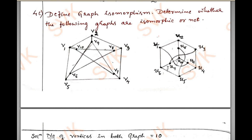This is the given question: define graph isomorphism, and determine whether the following graphs are isomorphic or not. They have provided two graphs; we can name these two graphs as G1 and G2.